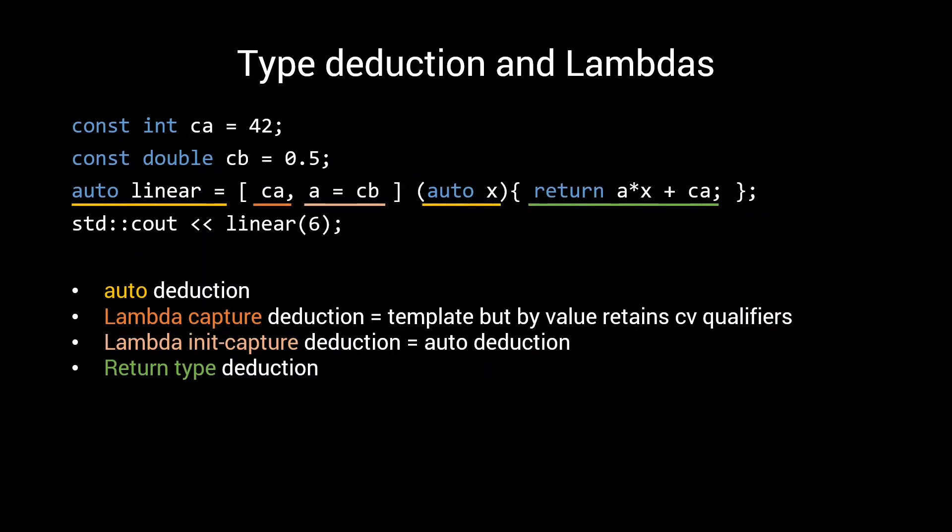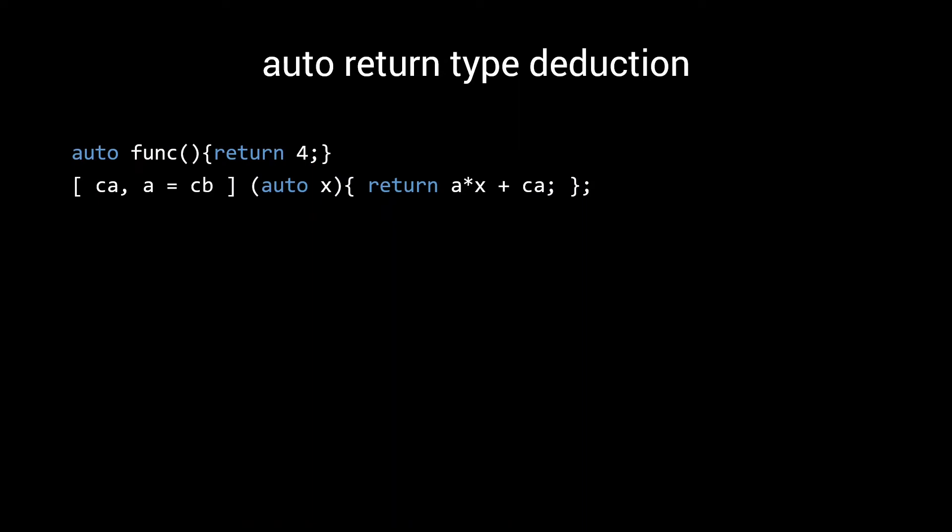So, back to our initial lambda. We have now discussed the first three forms of type deduction needed to parse this lambda. Next with return type deduction. In a lambda like this, where we haven't done anything special to explicitly specify the return type, auto return type deduction rules are used. That means that the return type of this function and the lambda follow the same rules.